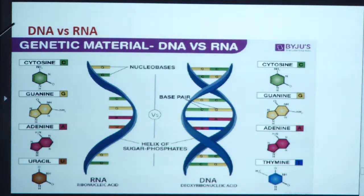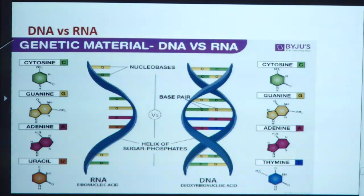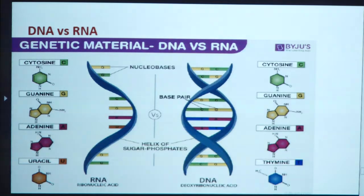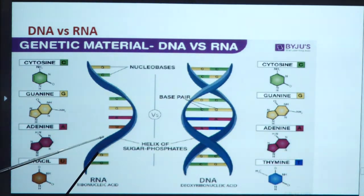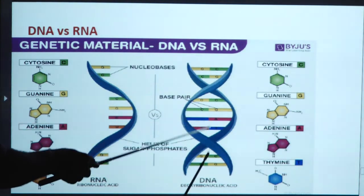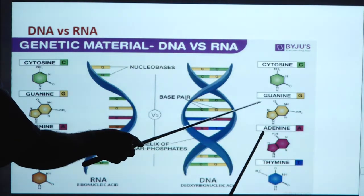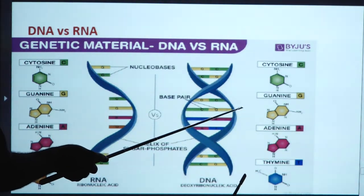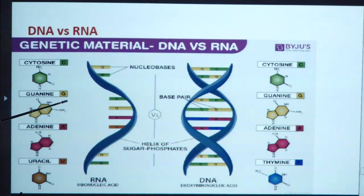DNA versus RNA: we can differentiate deoxyribonucleic acid from ribonucleic acid by several points. In DNA, we have adenine, guanine, cytosine, and thymine. In RNA, we have adenine, guanine, cytosine, and uracil. RNA is single-stranded in nature, while DNA is double helix in nature. On the basis of their nitrogenous bases, we can differentiate RNA and DNA.